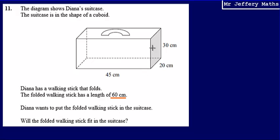Now, if we think about a walking stick or any object that won't bend going into a suitcase, we know that it's going to have to go in diagonally. So we're looking to find, is the distance from one corner of the cuboid to the complete opposite corner of the cuboid going to be 60 centimeters or more?